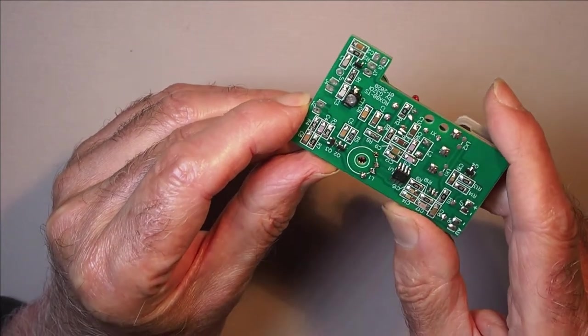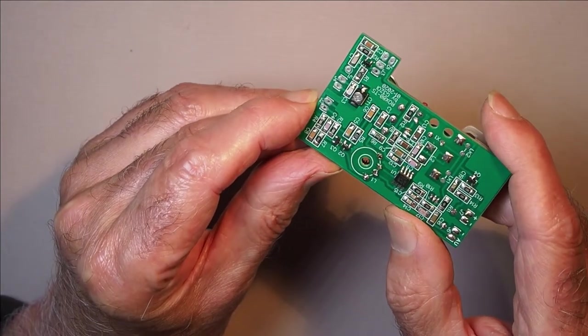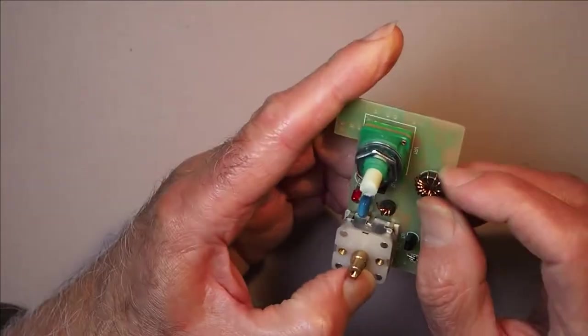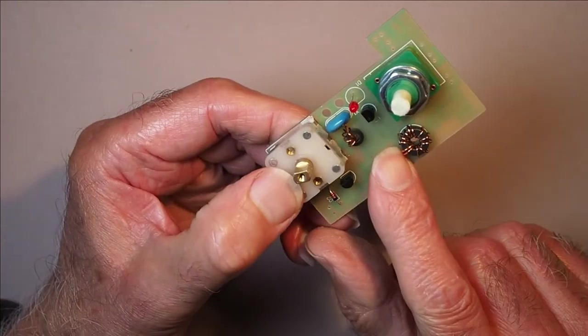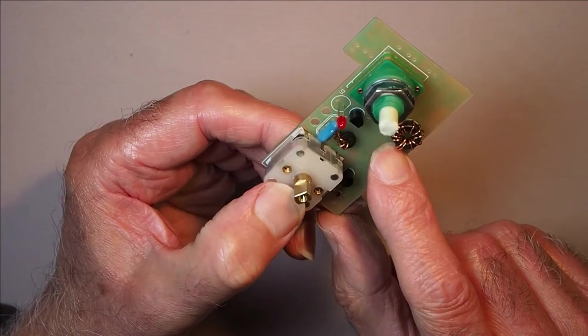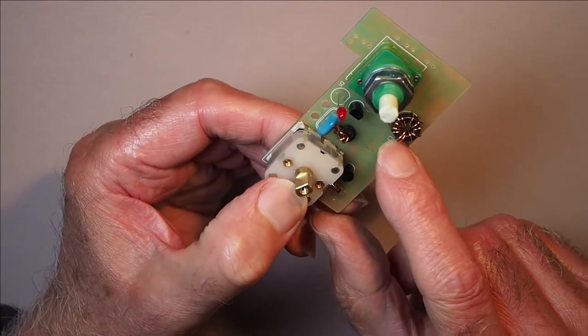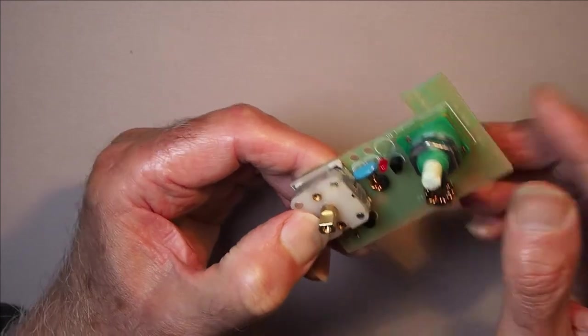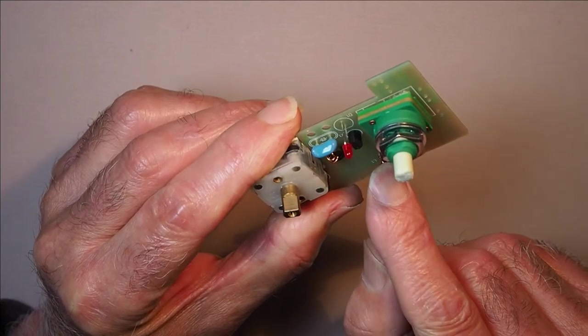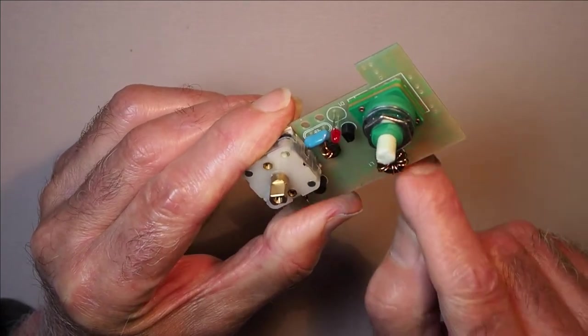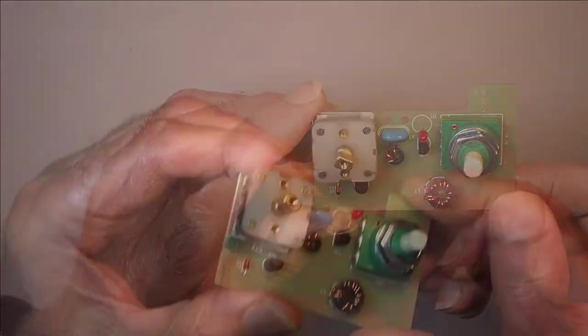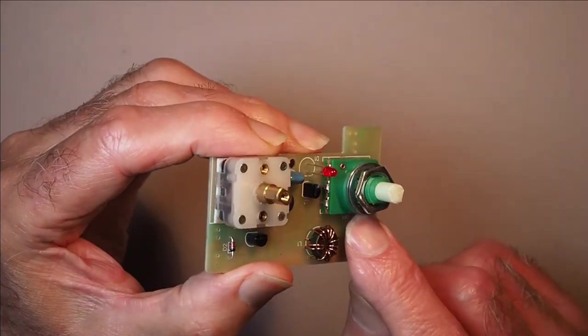The toroid here, if you wind that with something like 26 or even 28 gauge wire, then it should be rigid enough to be self-supporting. There is a hole in there so you could conceivably put a narrow zip tie to secure it, but you shouldn't really need it. Now this gain control pot.